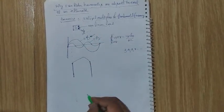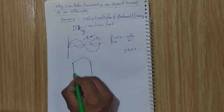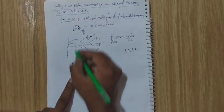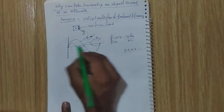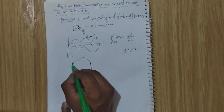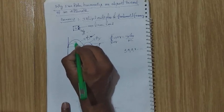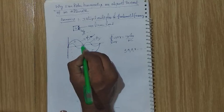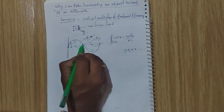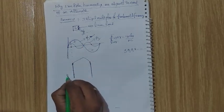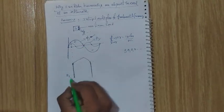Let us consider the fundamental flux waveform, Pi₁. According to Faraday's law of electromagnetic induction, whenever a conductor cuts the magnetic flux wave — this is conductor one and this is conductor two — an EMF is induced. This conductor cuts the fundamental flux wave. Consider the positive half cycle: at this instant, conductor one cuts the flux Pi₁, and the fundamental induced EMF e₁ is induced due to this positive half cycle.